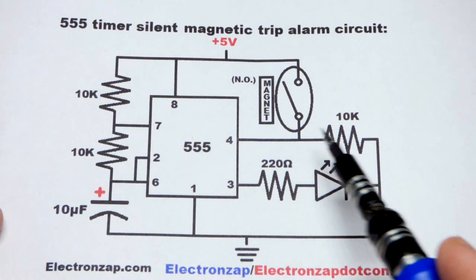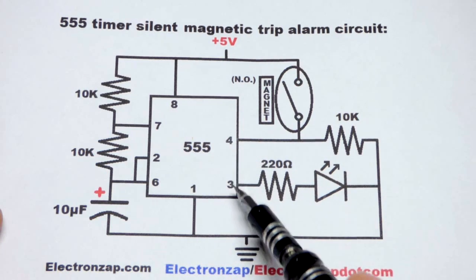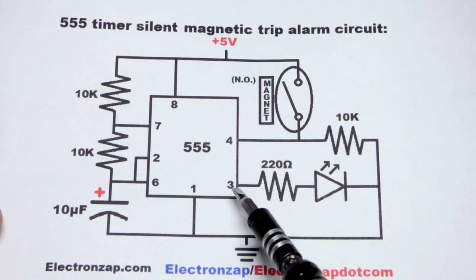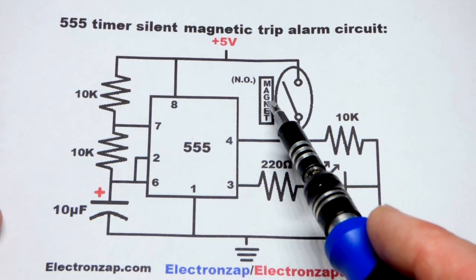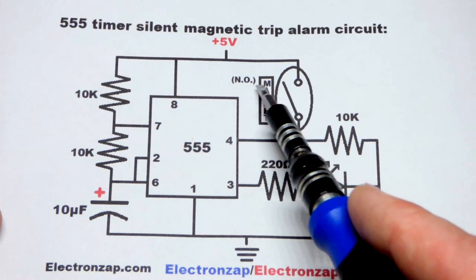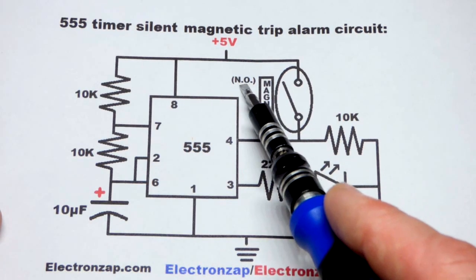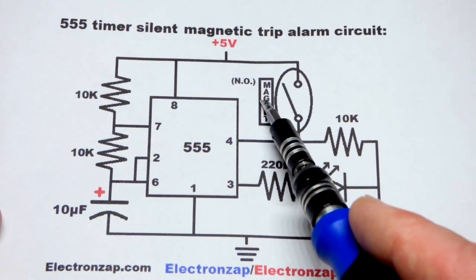So now we establish in this circuit, normally everything is off. It's locked into position and we have the magnet next to the switch sensor right there. And it's going to be in the normally open position.